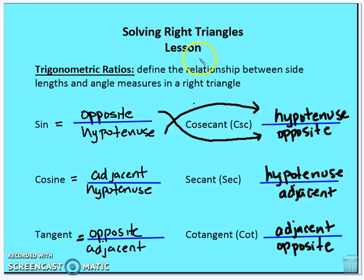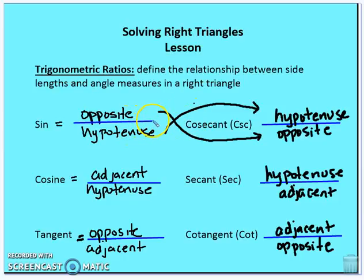Now we're going to talk about the reciprocal relationships: cosecant, secant, and cotangent. Cosecant is the reciprocal of sine — so instead of opposite over hypotenuse, it's hypotenuse over opposite. Secant is hypotenuse over adjacent, the reciprocal of cosine. Cotangent is the reciprocal of tangent, which is adjacent over opposite. In any pair, one always has a 'co': sine/cosecant, cosine/secant, tangent/cotangent.